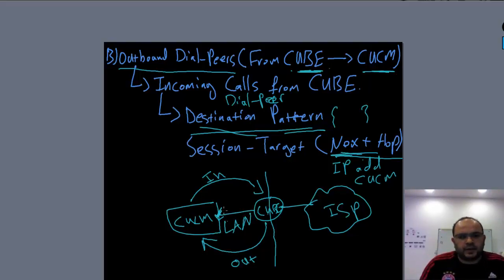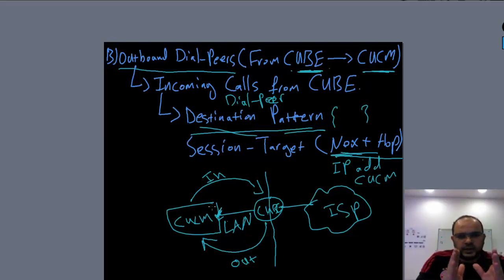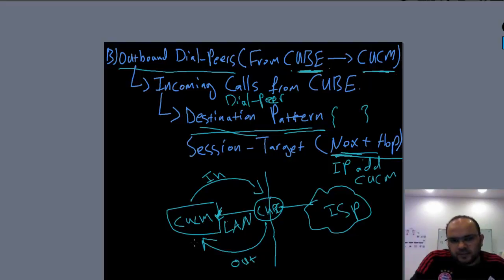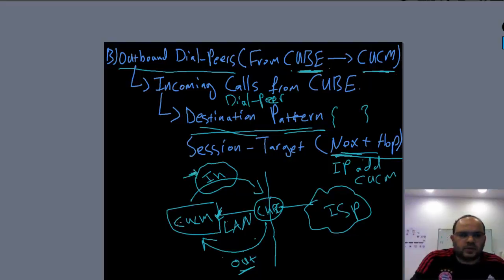I think this is very clear and straightforward. Later, after finishing the explanation, we will go to the configuration file and match what we have discussed in theory with what's in the lab. So on the LAN side: inbound is calls coming from CUCM to CUBE, and outbound is incoming calls coming from CUBE to CUCM. For the outbound, in most cases we need a next hop IP address; for the inbound, in most cases we don't.